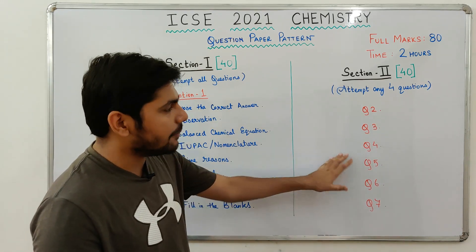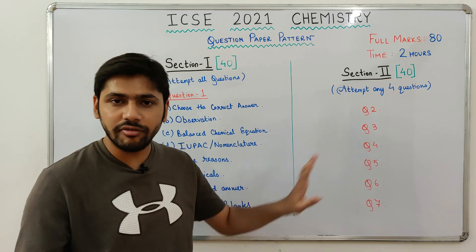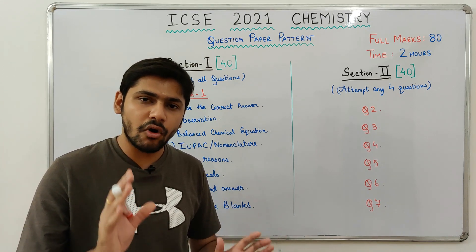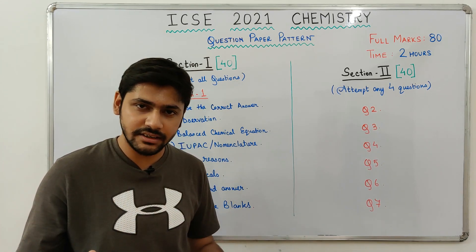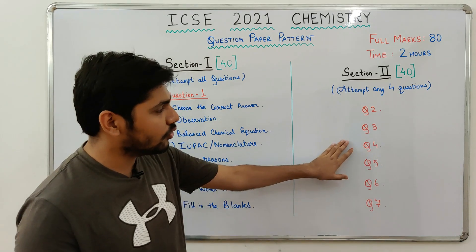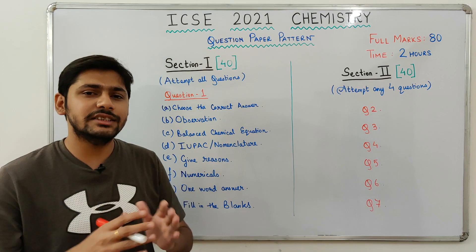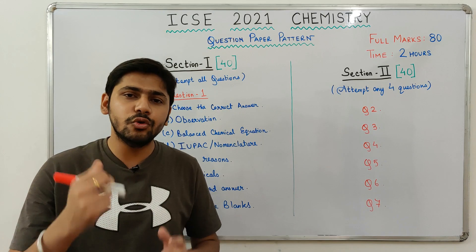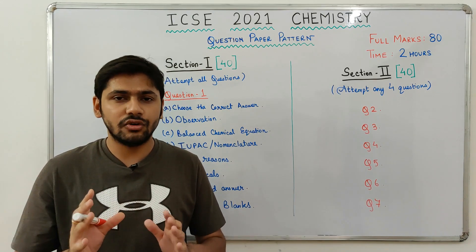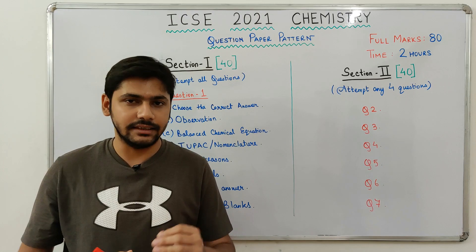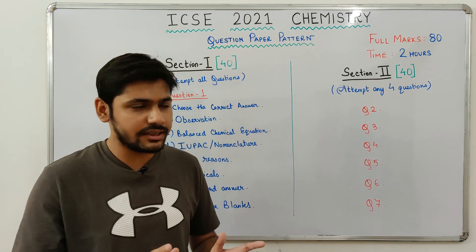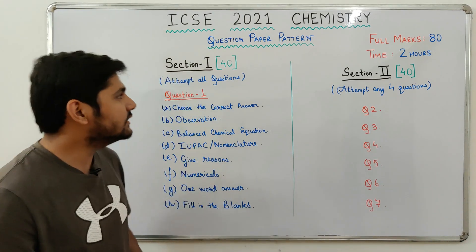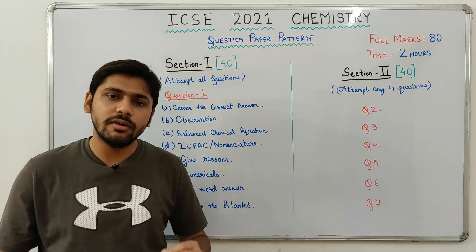There is no chapter combination in Section 2 of chemistry — questions come jumbled up from all the chapters. Because of a huge syllabus reduction, nothing can be predicted in Section 2. For example, normally one full question was asked from mole concept, but a huge chunk of mole concept has been removed, so predicting the chapter combination for Section 2 is quite difficult.